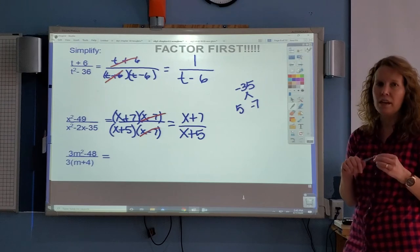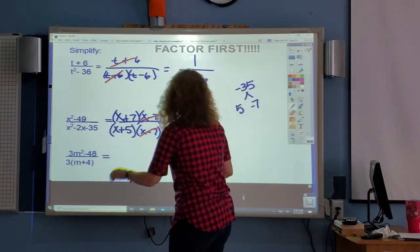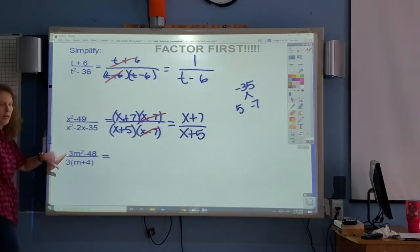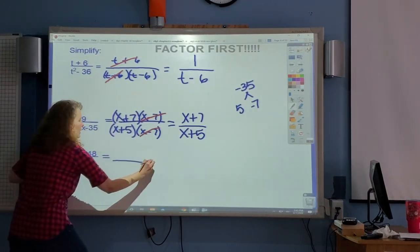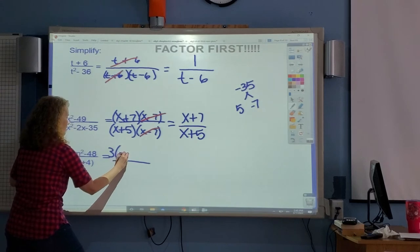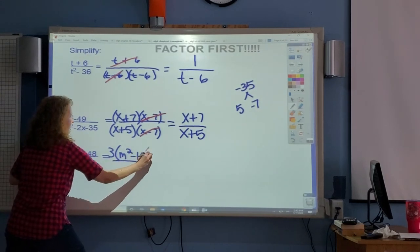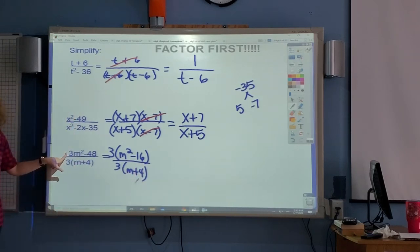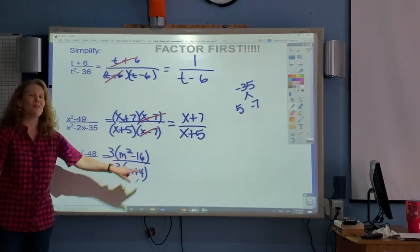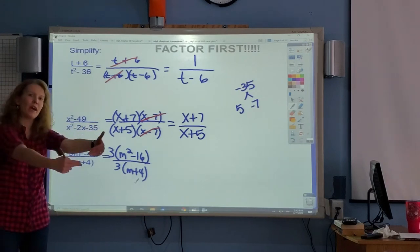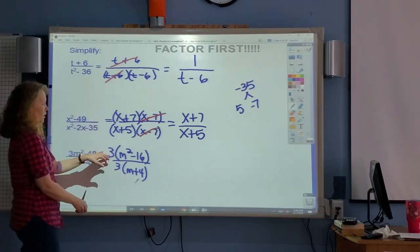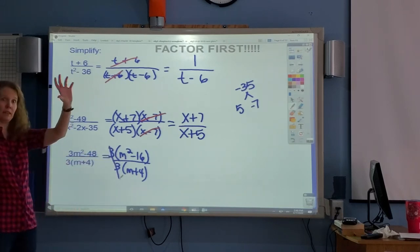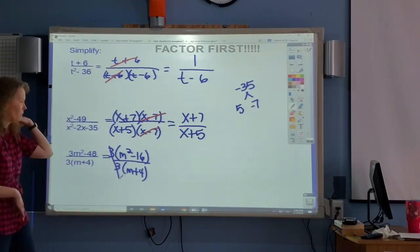The bottom is already factored on this one, but the top is not. Look at 3m squared minus 48. There's a GCF that you can pull out of both of those. So on the top, I'm going to pull 3 away. Are we finished factoring? No. Now we've got the difference of two squares. So go factor it out completely. I know you probably see the 3s. You want to go and get rid of them? Let's get rid of them. When they sit there like that, 3 over 3, it's 1. You can get rid of them.